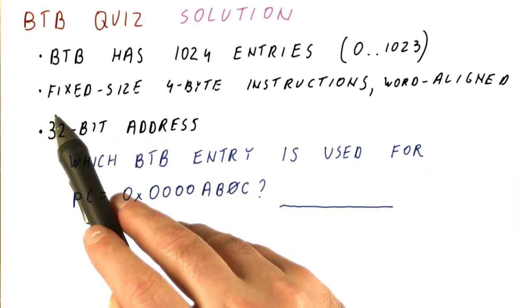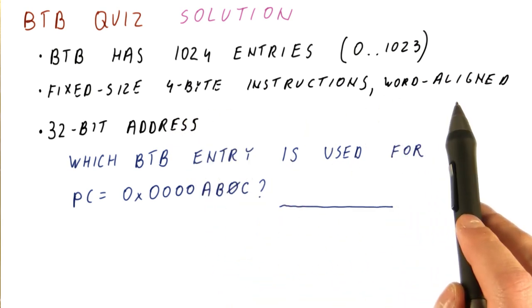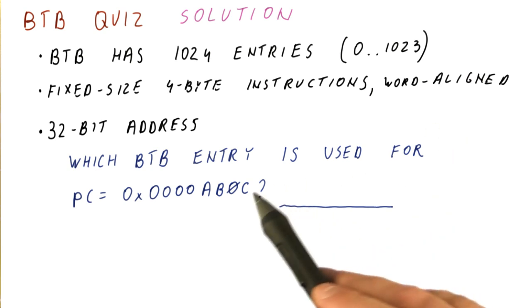However, note that instructions are fixed size, four bytes, and word aligned, which means that not all addresses are possible for the program counter.